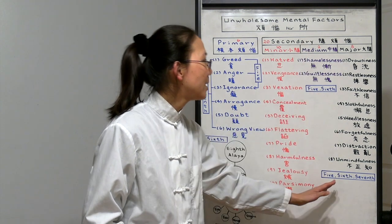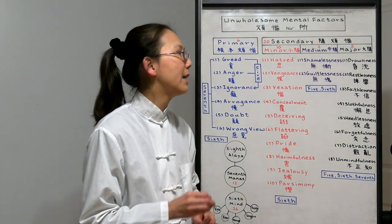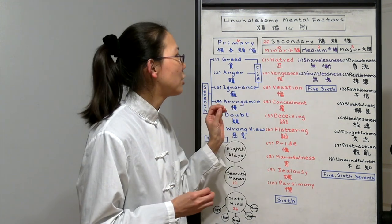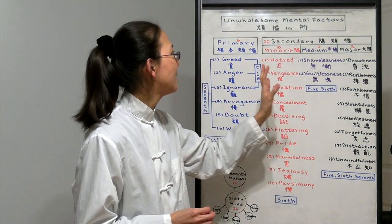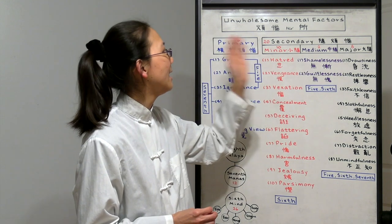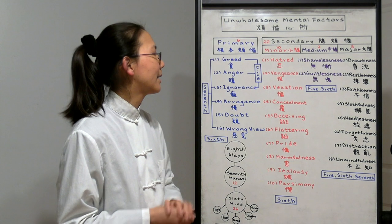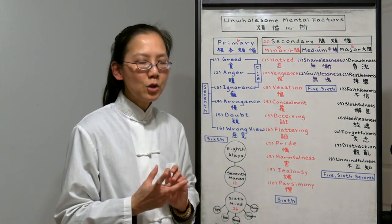All these are mental factors that are hindering our meditation. As you can see, the kinds of afflictions are different in the primary, secondary, the minor, median and major. Now let's look at them in terms of the eight consciousnesses.